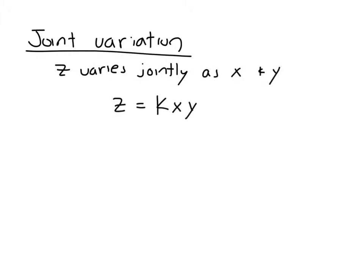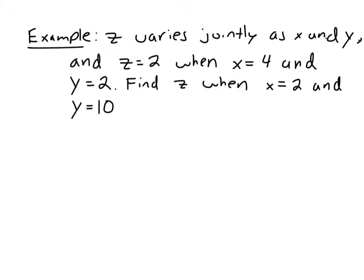Now let's go ahead and do an example. So say z varies jointly as x and y, so that means you're being cued off, varies jointly, so you're being cued off to use this equation, k times x times y.